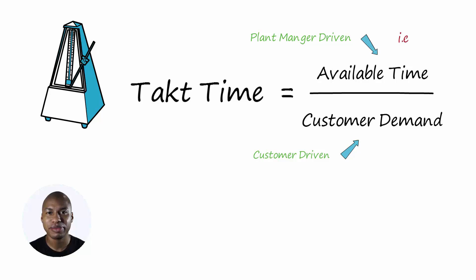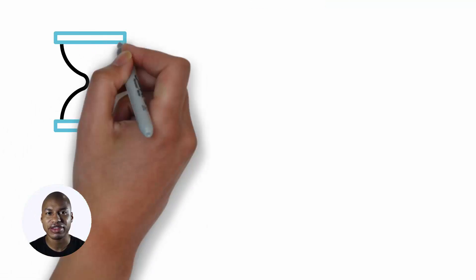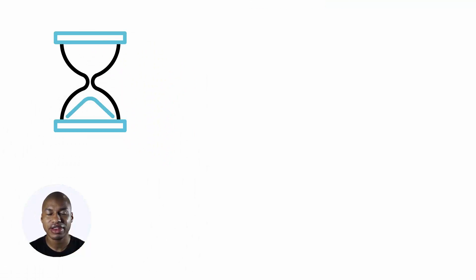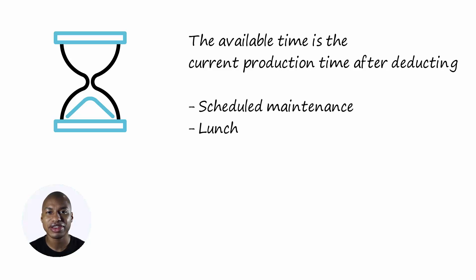For example, the plant manager could use overtime to increase the available time. The available time is the current production time after deducting scheduled maintenance, lunch, breaks, team meetings, etc.